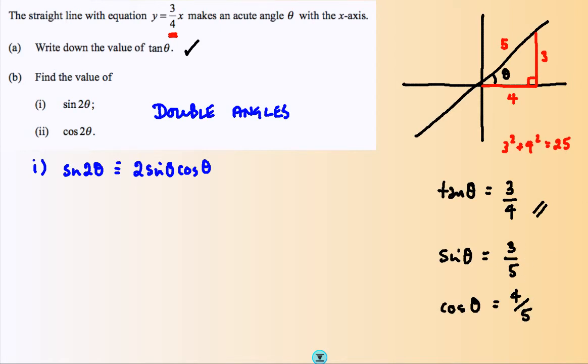I can take those two, go back here. 2, 3 times 4, 24, 5 times 5, 25, sine 2 theta. There we go.